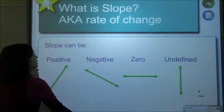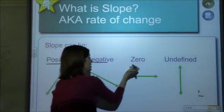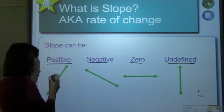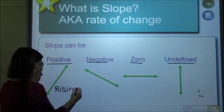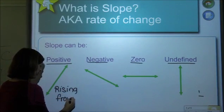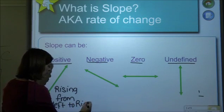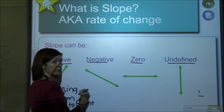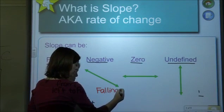Alright, again, what is slope? Slope can be positive, negative, zero, or undefined. And that's really important. A positive slope is rising from left to right. So if I'm writing, you're writing. Positive from left to right. So it's rising. If it's negative, from left to right, it's falling.